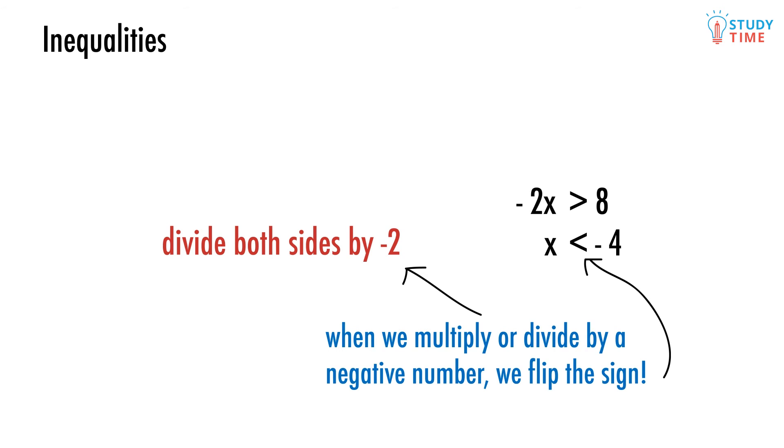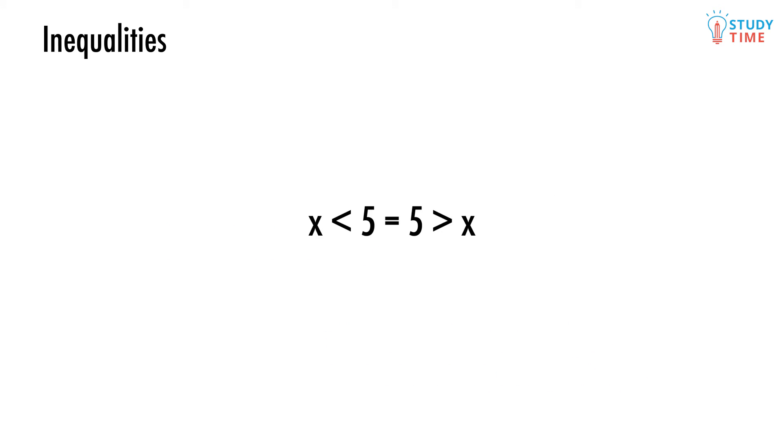But when we multiply or divide both sides by a negative number, we have to flip the inequality sign around. Lastly, and this should be obvious, if we flip the entire inequality around, we have to remember to flip the sign as well so that it still says the same thing. So inequalities are basically the same as equations, except when we multiply or divide by a negative number we flip that inequality sign. Simple.